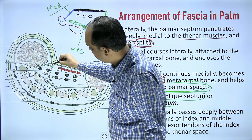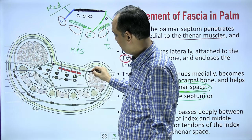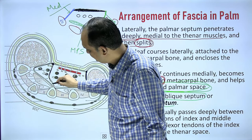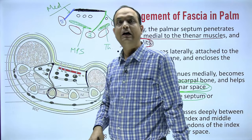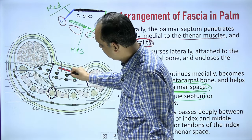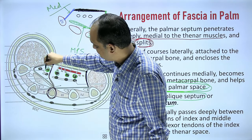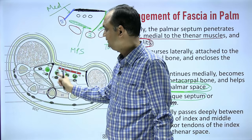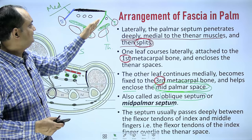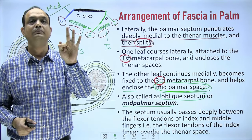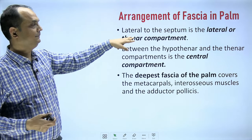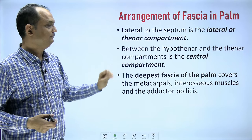In the cross-sectional image, you can see the lateral and medial borders, with the medial septum and lateral septum (which splits at the oblique septum going to the third metacarpal). In the central compartment, if you see the tendons, there are only three — one, two, three — while the fourth tendon (index finger) is on the lateral side of the oblique septum. The oblique septum separates the index finger tendon from the remaining three tendons. Between the hypothenar and thenar compartments you have the central compartment.